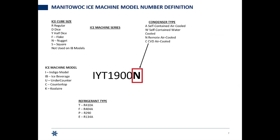That means that the condenser and the condenser fan motor are outside of the ice machine head, so the heat rejection is outside of the ice machine. We do have other options: A for self-contained air-cooled, W for self-contained water-cooled, and C for our CBD air-cooled — systems that have the compressor and the condenser outside of the ice machine head.